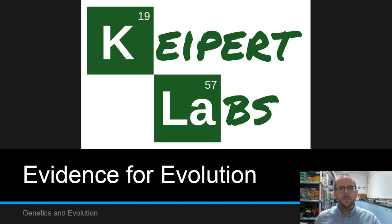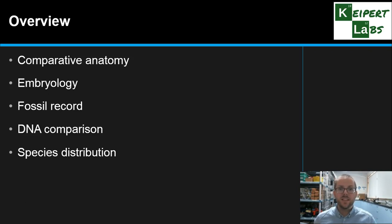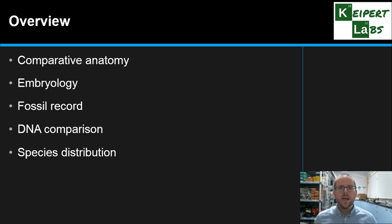Hi everyone, welcome to this episode of Kaipit Labs. In today's video we're going to be discussing the evidence for evolution. There are five main areas: comparative anatomy, embryology, the fossil record, DNA comparison, and species distribution. We're going to go through each one of these, illustrating how each of these lines of evidence — these separate fields of science — help to support the theory of evolution.